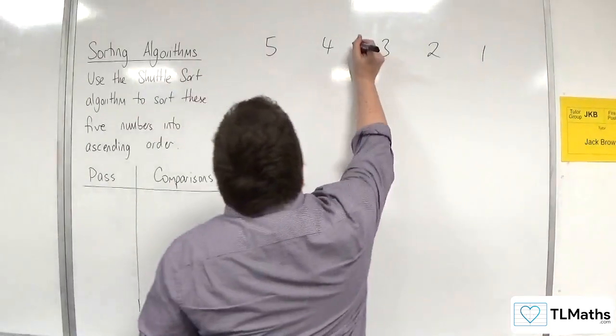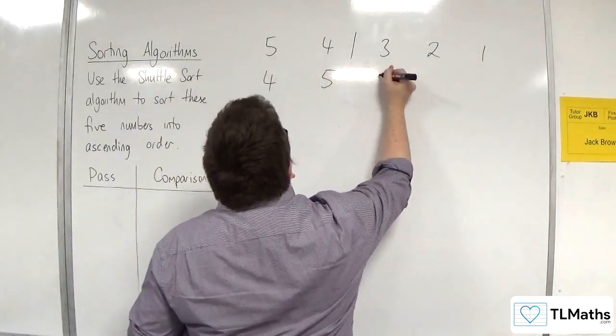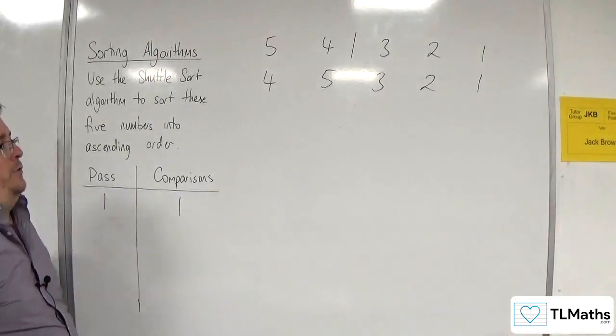So, first of all, we would compare 4 and 5. They need to be swapped, and so we'd now have 4, 5, 3, 2, 1. So, in the first pass, we make one comparison.